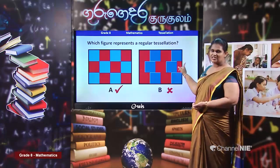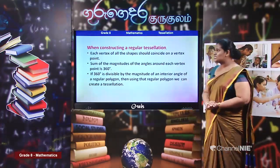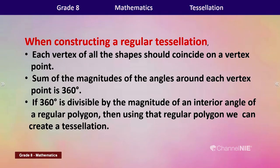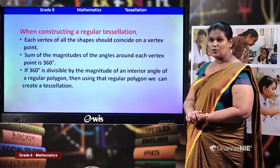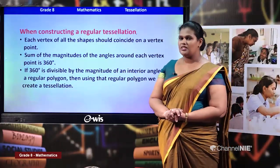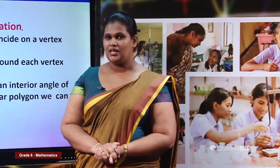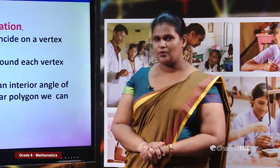When constructing a regular tessellation: each vertex of all shapes should coincide on a vertex point; the sum of the magnitudes of angles around each vertex point is 360 degrees; if 360 degrees is divisible by the magnitude of an interior angle of a regular polygon, then using that polygon we can create a regular tessellation.